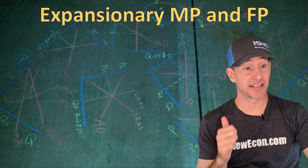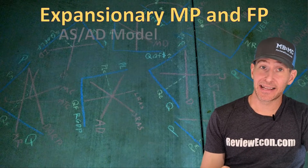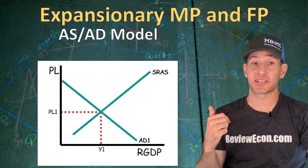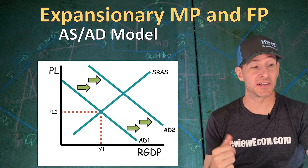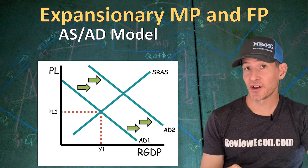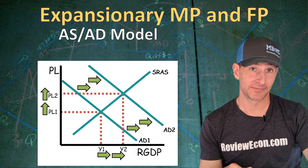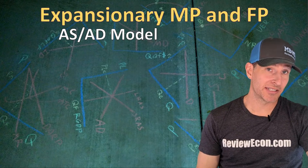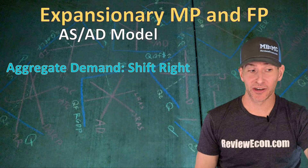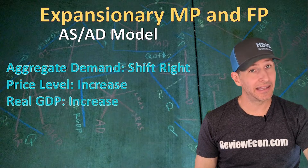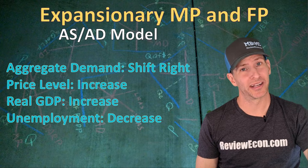First, let's take a look at the impact of expansionary monetary policy and expansionary fiscal policy. In the AS-AD model, expansionary monetary policy gives us a rightward shift of the aggregate demand curve, and expansionary fiscal policy also gives us a rightward shift. Both of those shifts result in higher price levels and higher real output. The net effect means we see a rightward shift of aggregate demand, an increase in the price level, an increase in real GDP, and a decrease in unemployment.